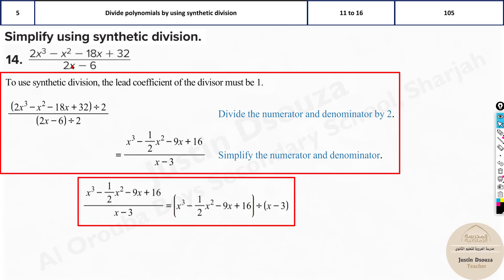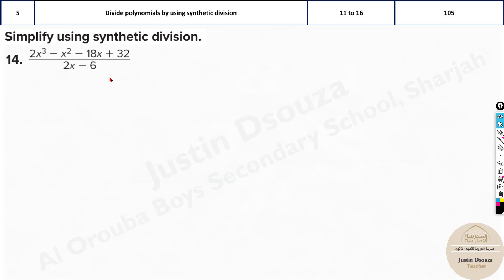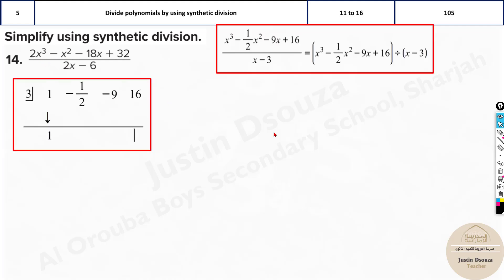If there is a coefficient more than one in the denominator, then you need to divide throughout by the same term and remove the coefficient. It can only be x, then only can you use synthetic division. But this doesn't matter for the shortcut method. If you're using the shortcut method, don't worry. Just put it as it is and then check for all the four options.